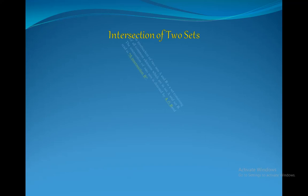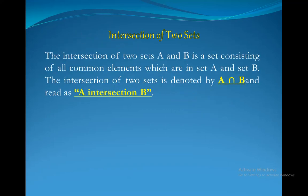Let's have the definition first. The intersection of two sets A and B is a set consisting of all common elements which are in set A and set B. The intersection of two sets is denoted by A ∩ B and read as 'A intersection B'.